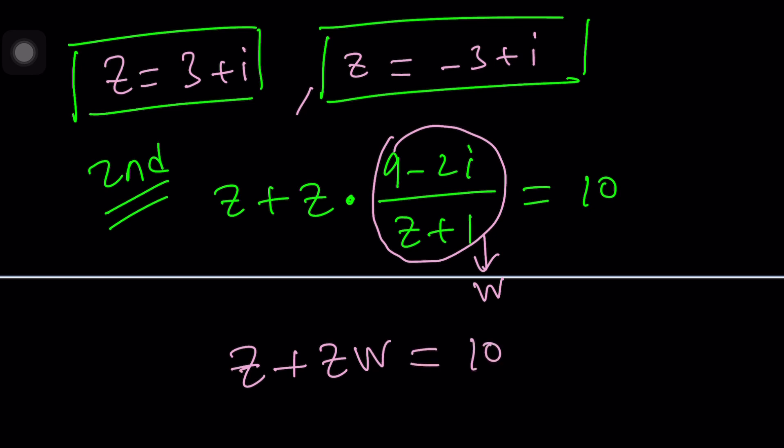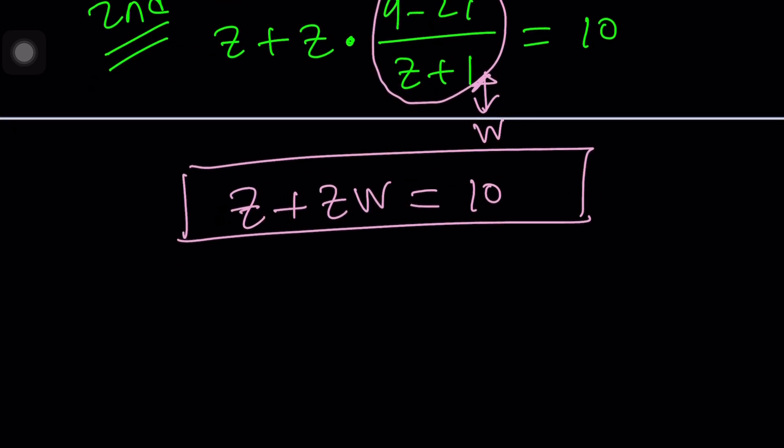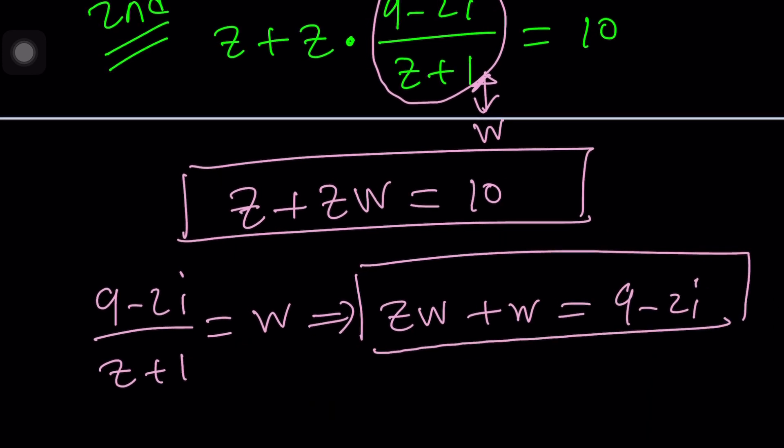But then let's think about the meaning of this new name. We call that whole thing w. So what does that mean? What does that imply? Let's find out. Set it equal to w, cross multiply. You get zw plus w equals 9 minus 2i. Uh-oh, that gave me another equation. There you go, this is your system.